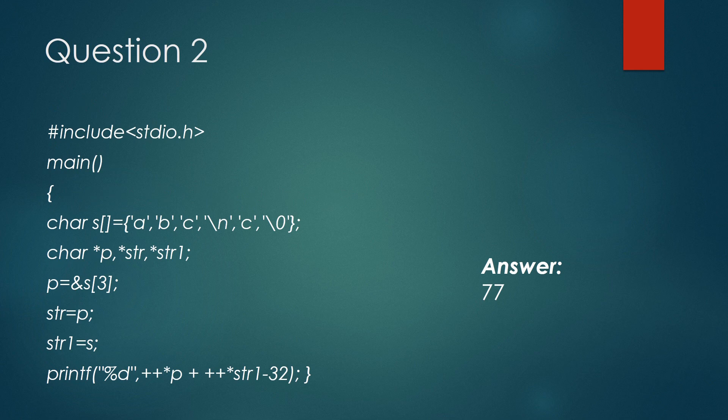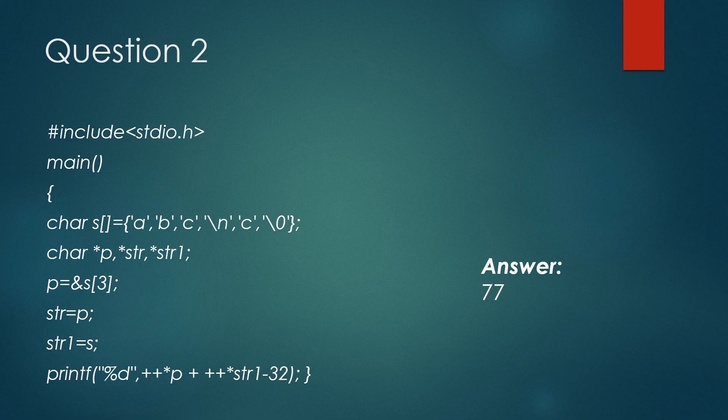Let's see the second question. What will be the output of this code? Here, first there is a character array s, then there are three character pointers declared. P is pointing to character \n. str1 is pointing to character a. Now ++(*P) - that is, P is pointing to \n and that is incremented by one.